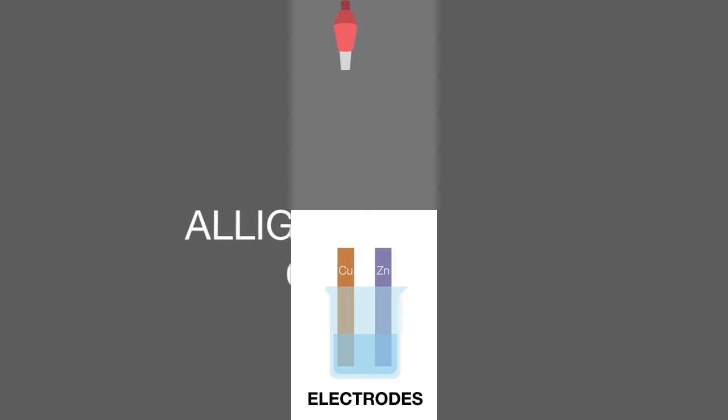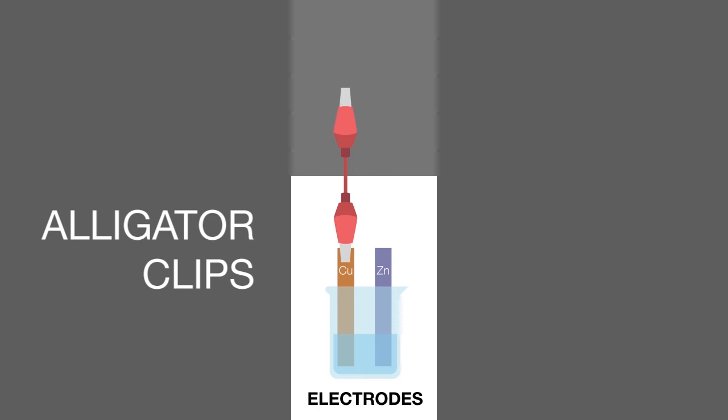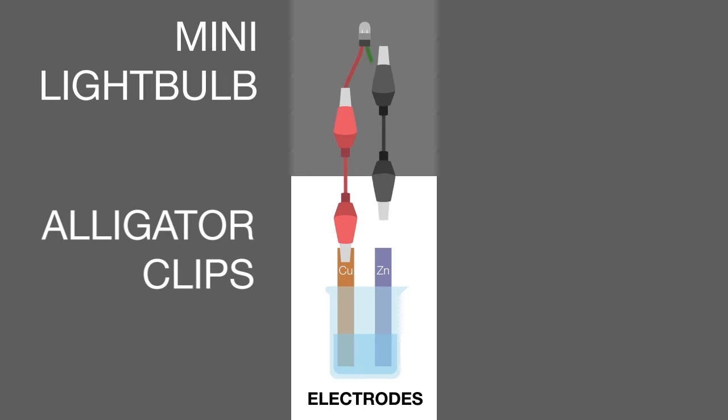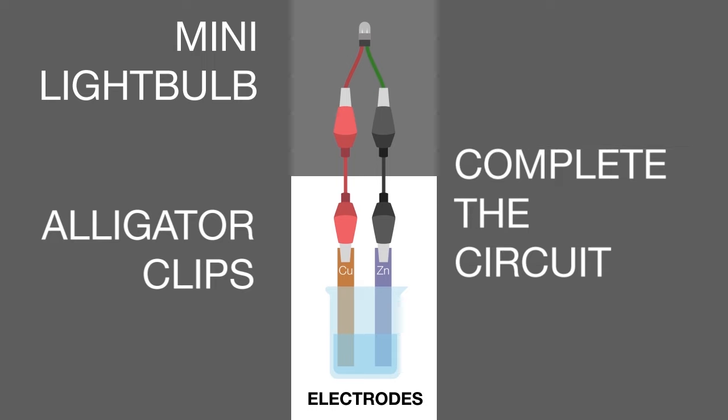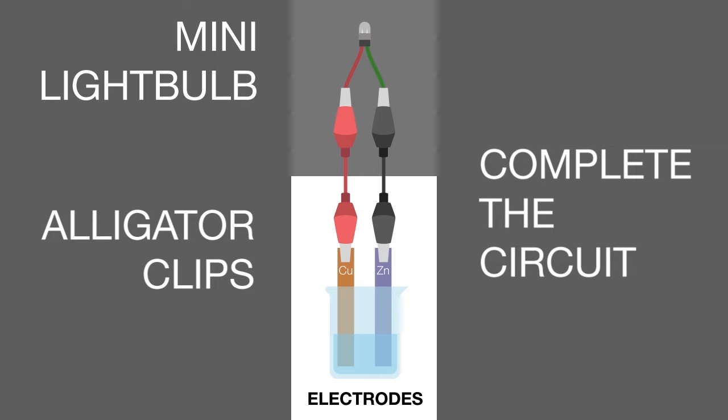Using two alligator clips, connect one strip to one end of the mini-light bulb, and another strip to the other end to complete the circuit. You will see that the light bulb lights up. Hence, the solution conducts electricity.